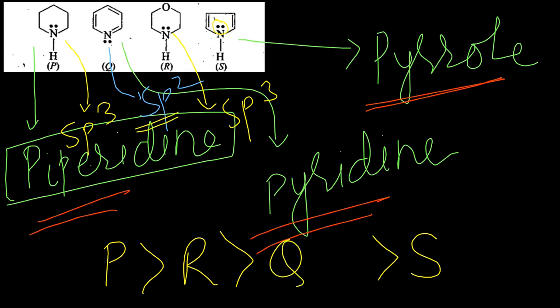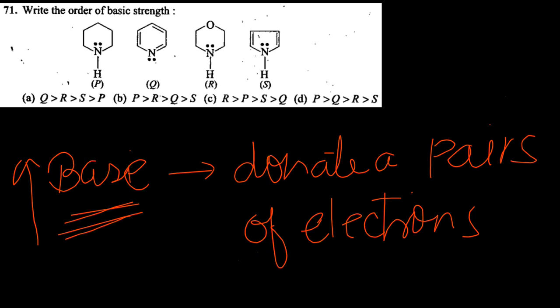Why is Q (pyridine) less basic? Because the lone pair of nitrogen is associated with sp2 hybridized nitrogen atom. So the answer is P > R > Q > S, i.e., PRQS. Checking the options, the answer is option B.